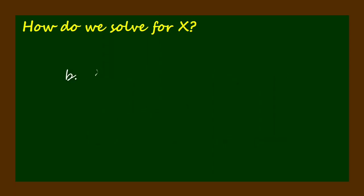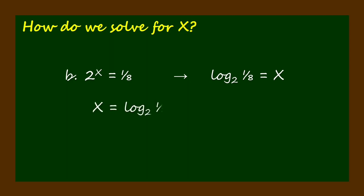2 to the x power equals 1 eighth. It can be written in logarithmic form as the logarithm of 1 eighth to the base 2 equals x. And x equals the logarithm of 1 eighth to the base 2. In this case, x equals negative 3 because 2 to the negative 3 power equals 1 eighth.